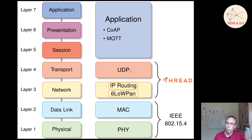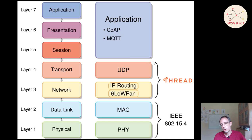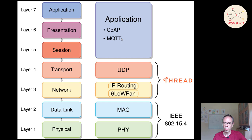On top we have UDP — TCP is optional but Thread typically uses UDP for communication. This means we don't establish a connection; it's not really reliable, so we need to confirm packages ourselves or use an application layer protocol. A quite common one is CoAP, which I will introduce later. It's not really defined in Thread but it's quite common to use CoAP with Thread, and it's already implemented in the free OpenThread stack.